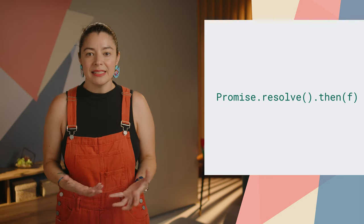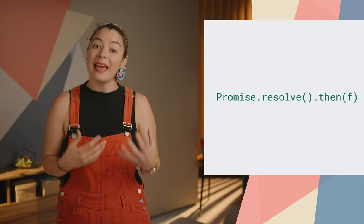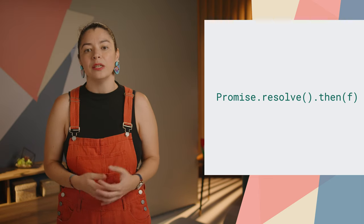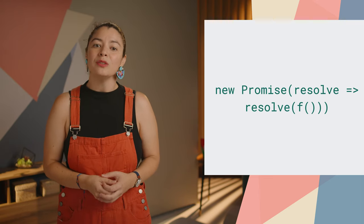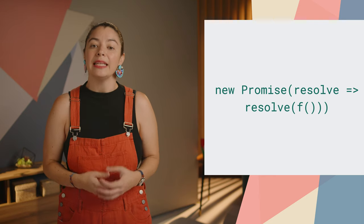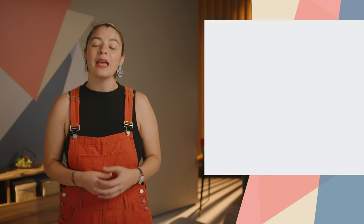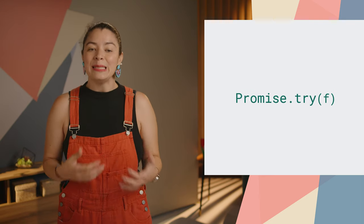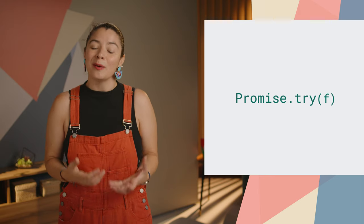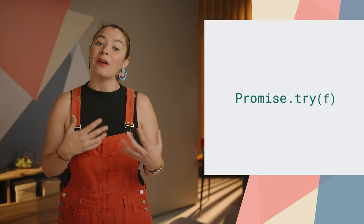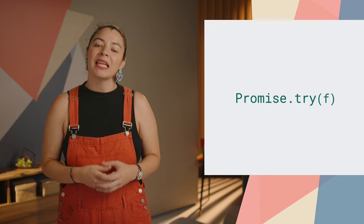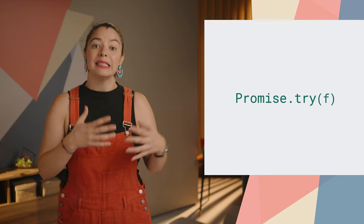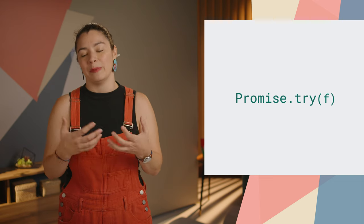One way to achieve this is the code on the screen, but f is run asynchronously when it might not be necessary. To avoid this problem, you need to use the code on the screen to create a new promise. Promise.try is the simple, straightforward way to accomplish the same, allowing you to start a promise chain where you can catch all errors in .catch handlers, instead of having to handle both synchronous and asynchronous exception flows.